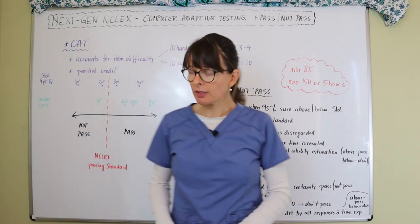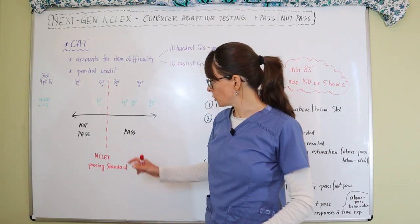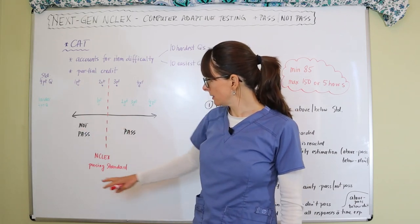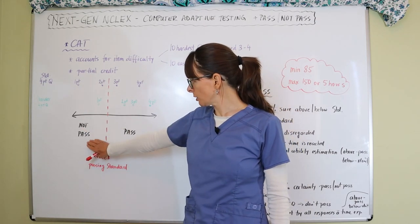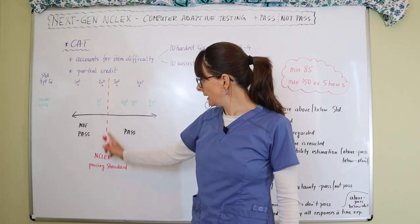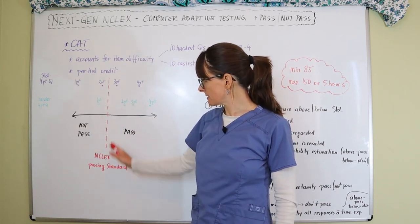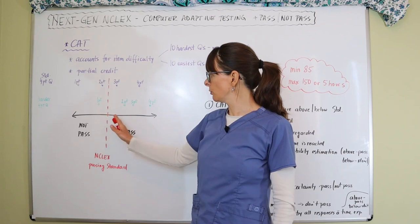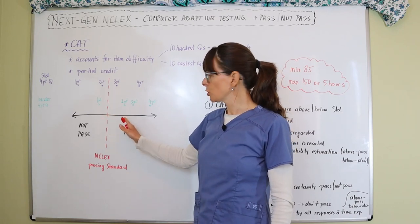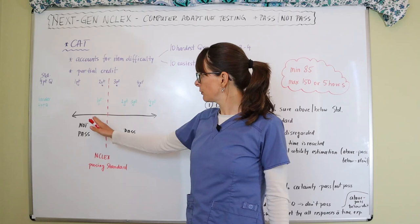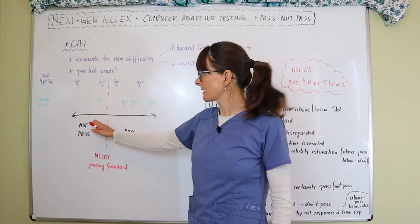There's a graph here that I've drawn out. We have this line that determines pass and not pass, and this red line is the NCLEX passing standard. If you're getting enough points to be above that line, you pass the NCLEX. If you're below, you're not going to pass.